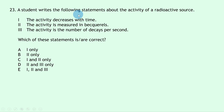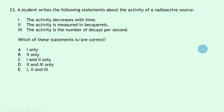Question 23: three statements about radioactive activity. Statement 1 — activity decreases with time — is true, as shown by the exponentially decaying activity-time graph. Statement 2 — activity is measured in becquerels (Bq) — is true. Statement 3 — activity is the number of decays per second, given by a = n/t — is also true. All statements are correct. The answer is E.